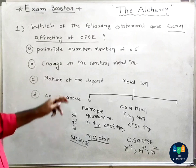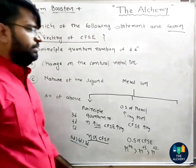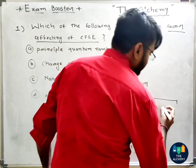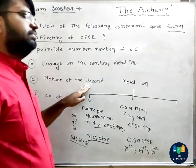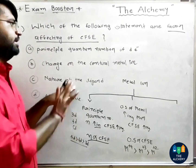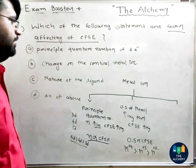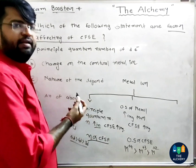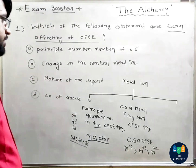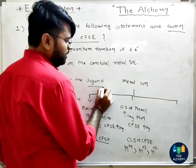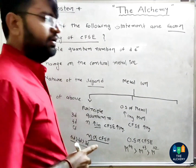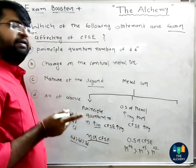The third factor is the nature of the ligand. Ligand strength determines the splitting. When the ligand strength is stronger, the CFC value will be higher. Strong field ligands produce larger crystal field splitting.